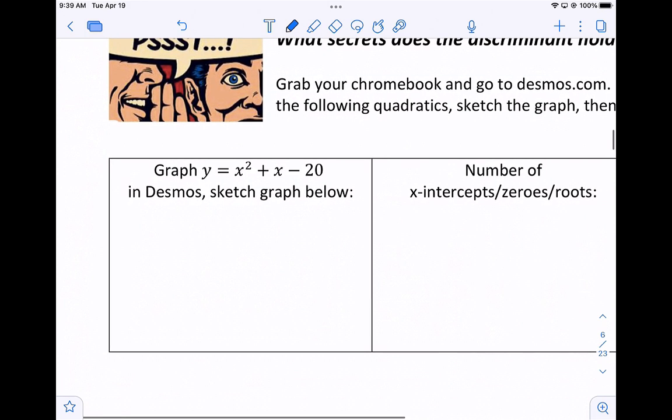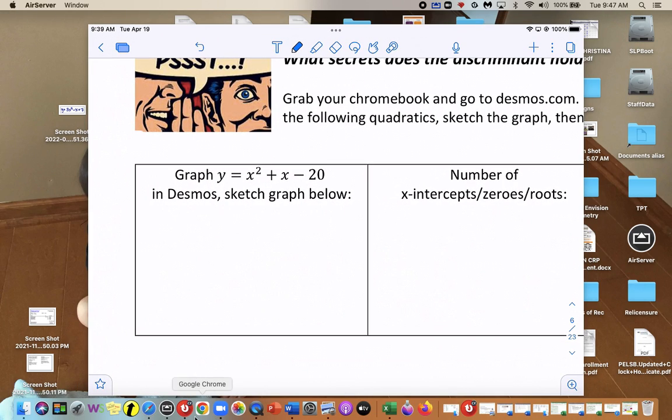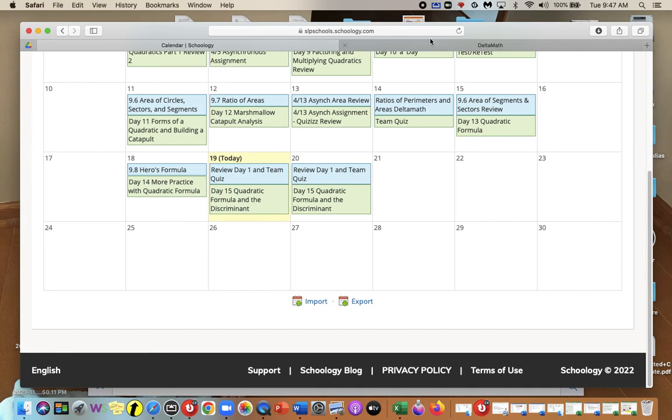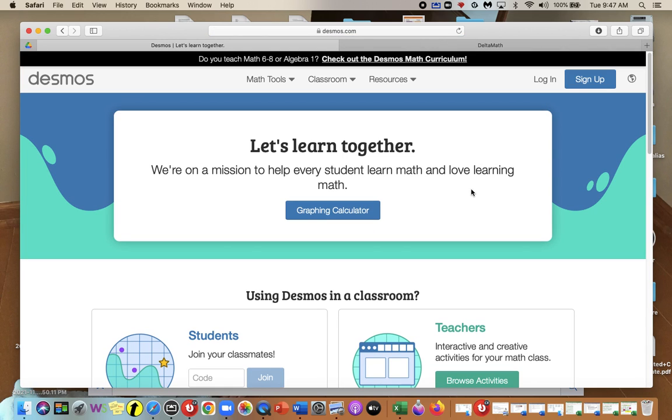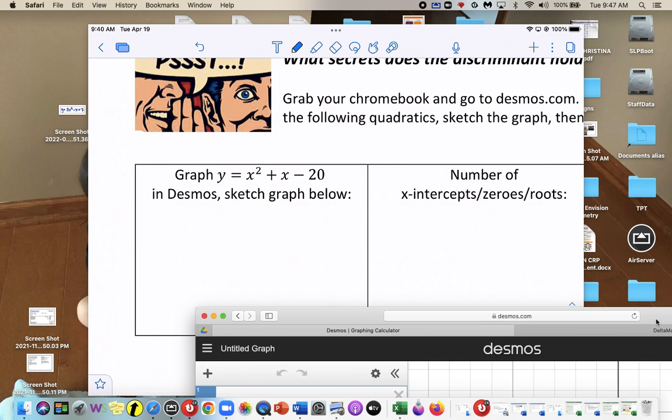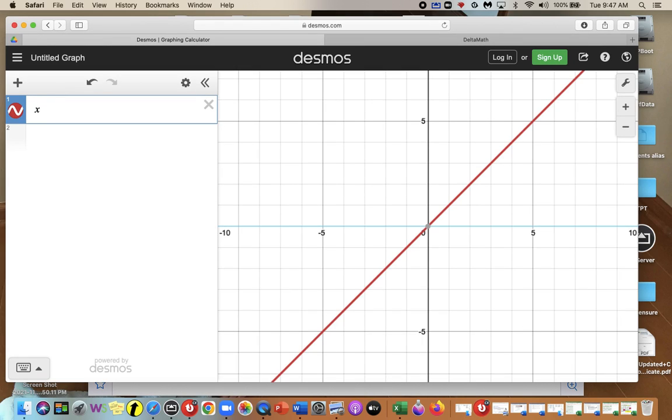So in Desmos, you're going to go ahead and sketch this one right here. We have x squared plus x minus 20. So we'll just pull up Desmos. And type it in, x squared plus x minus 20. Shift 6 will give you the squared. x squared plus x minus 20.